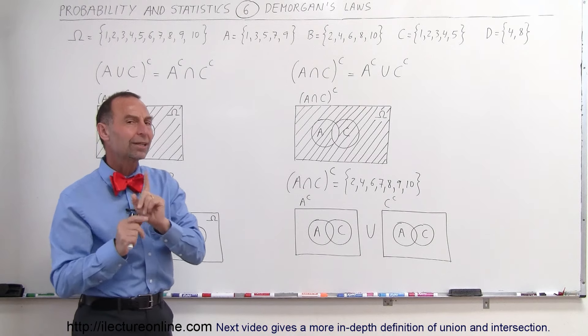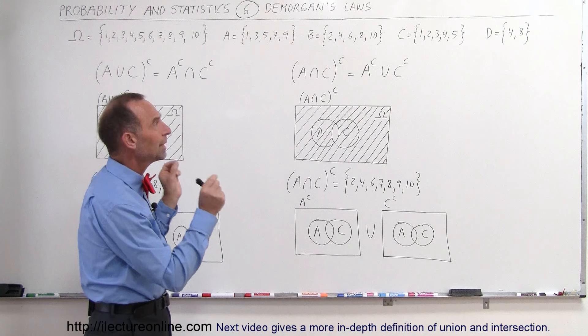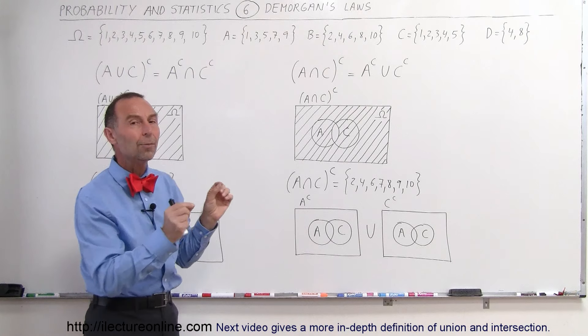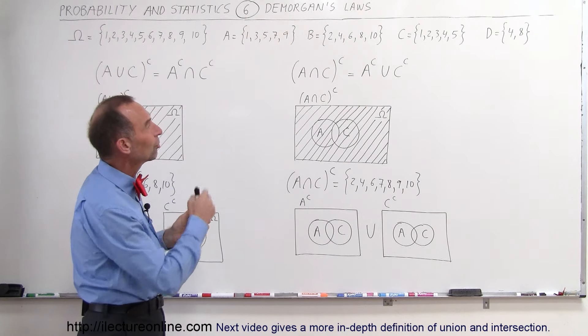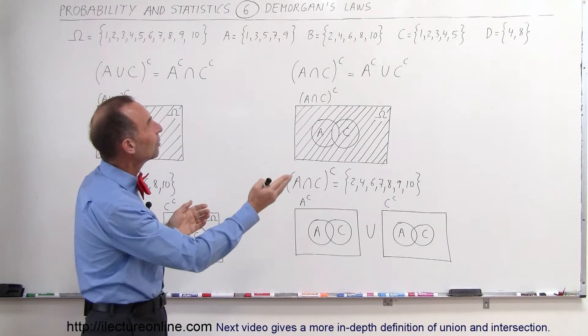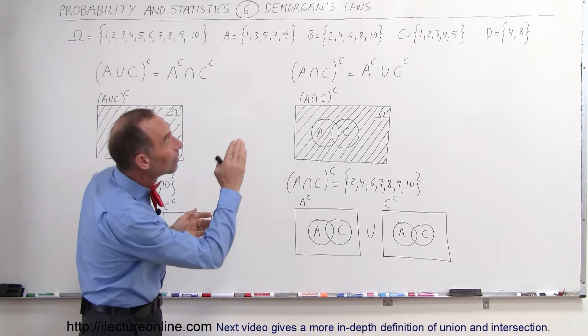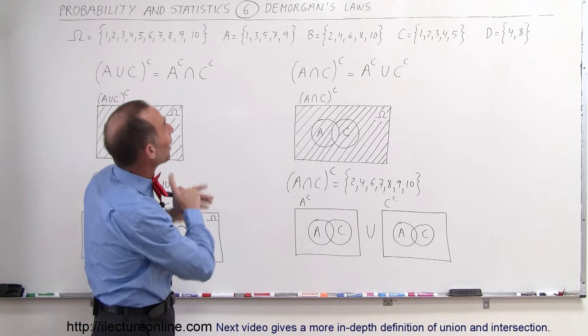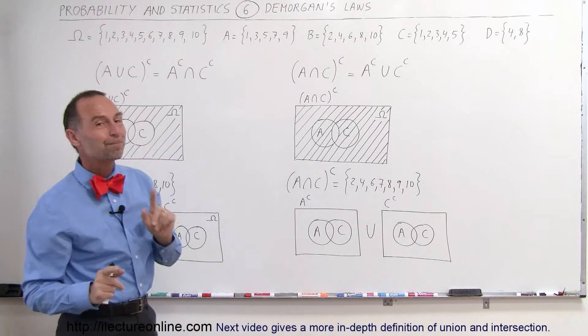But when you look at A and C, there's some dependency — some of the elements within them are the same. And then you look at D: D has dependency with B, but not with A, but also with C.